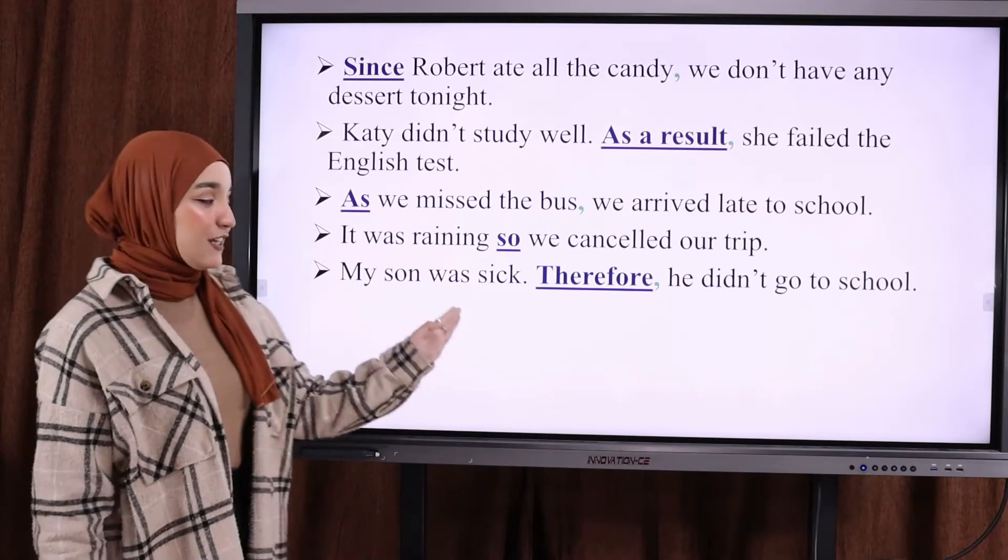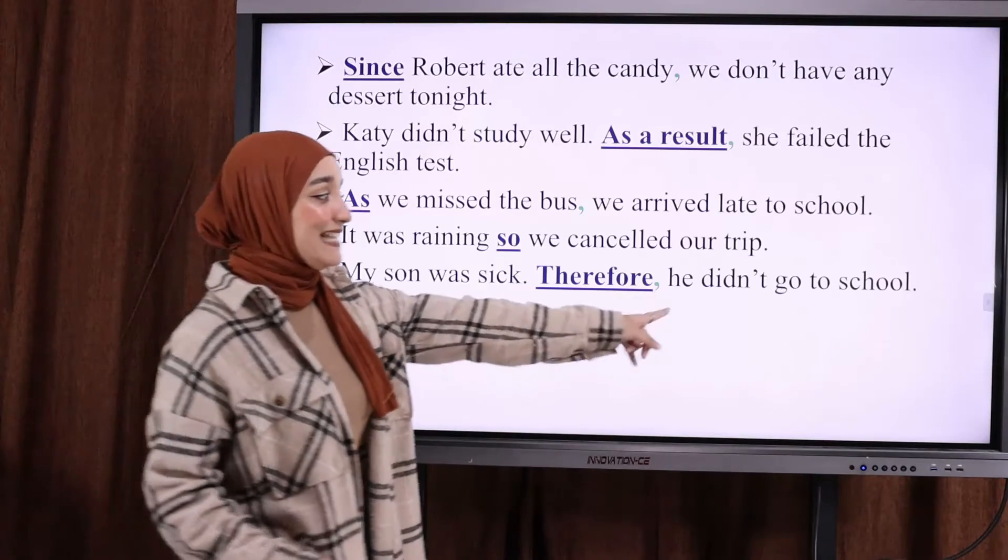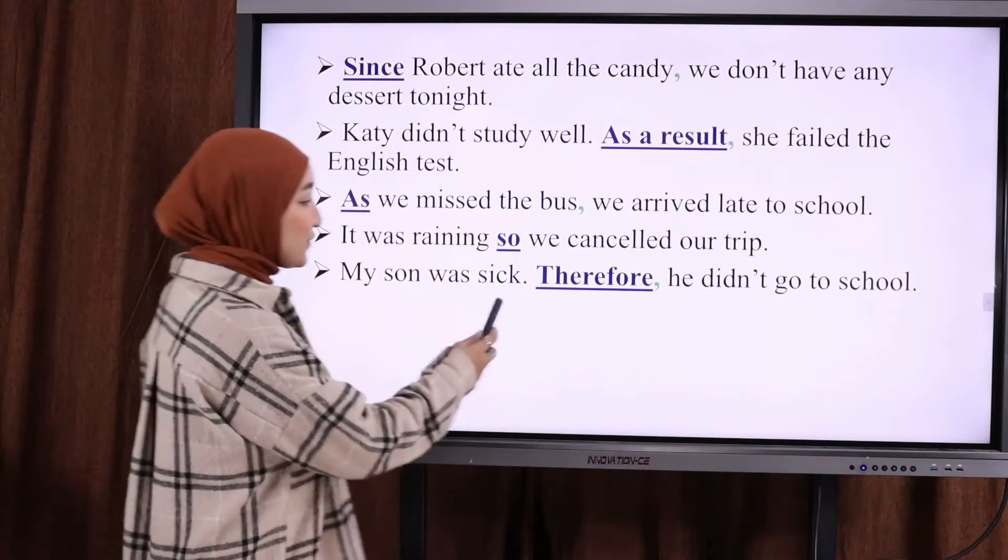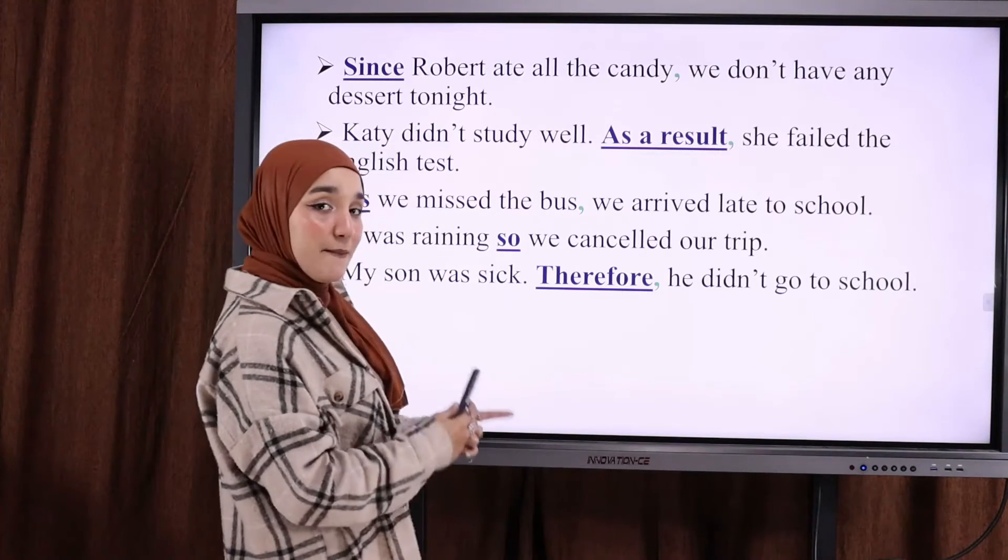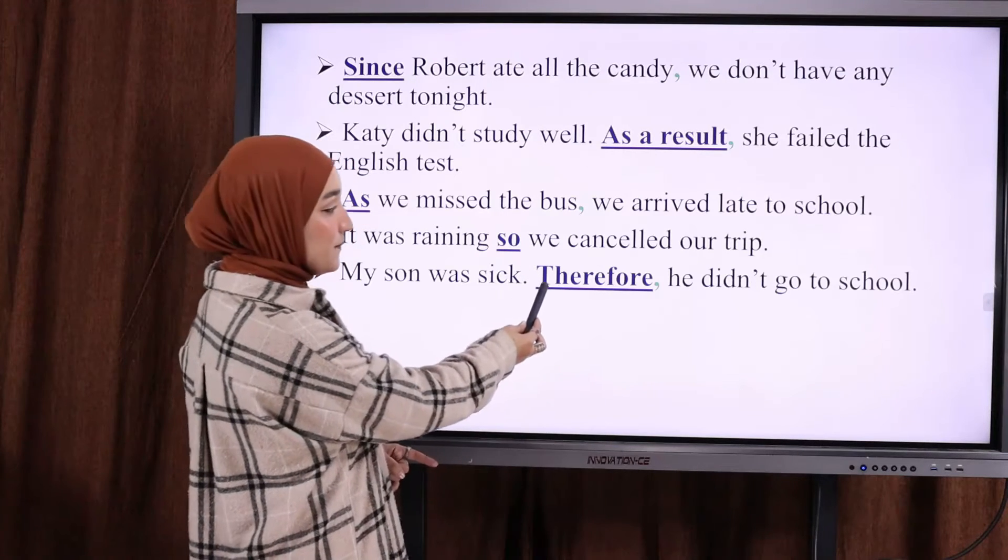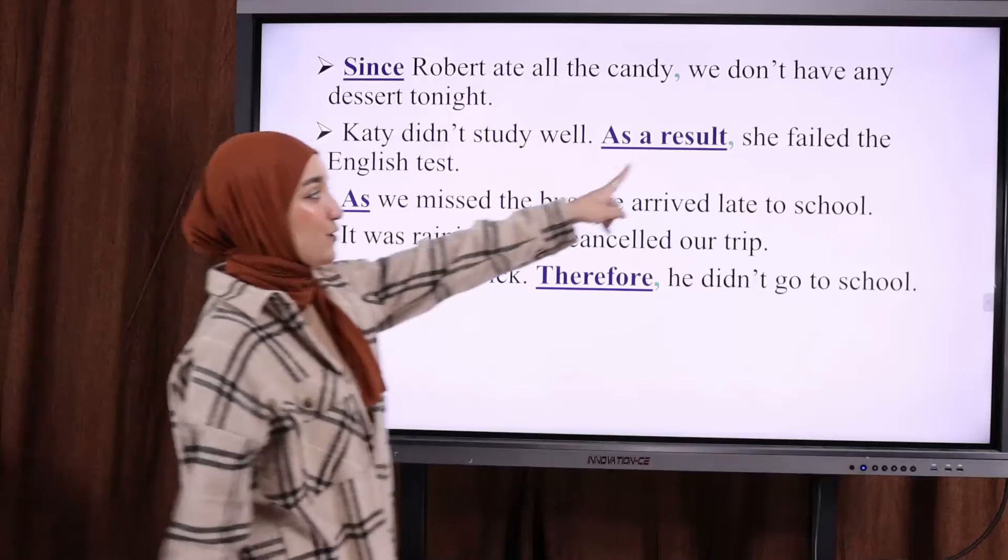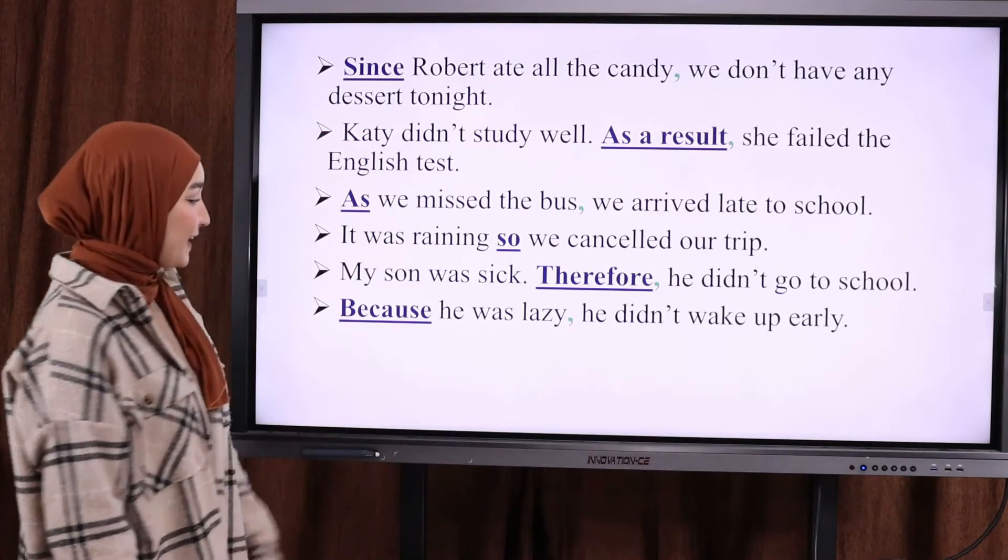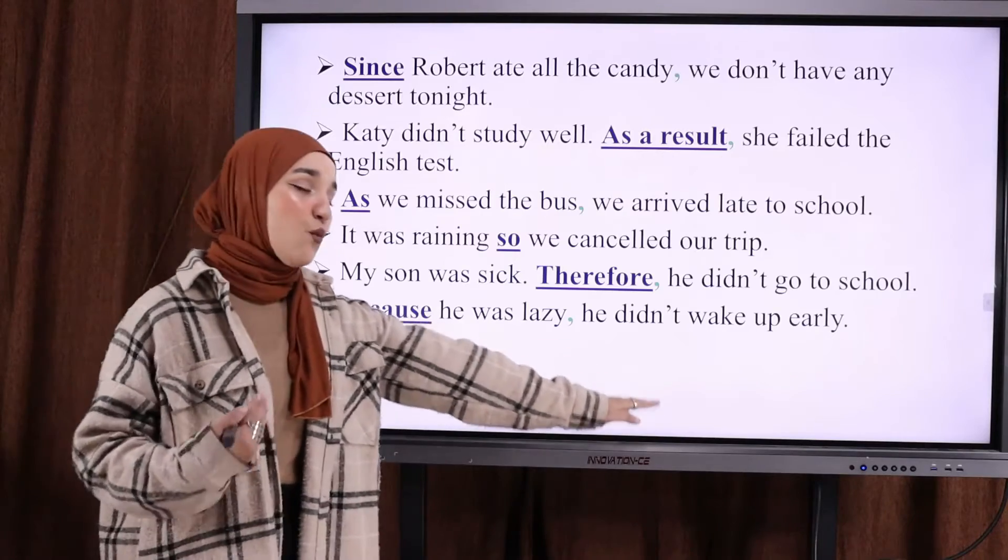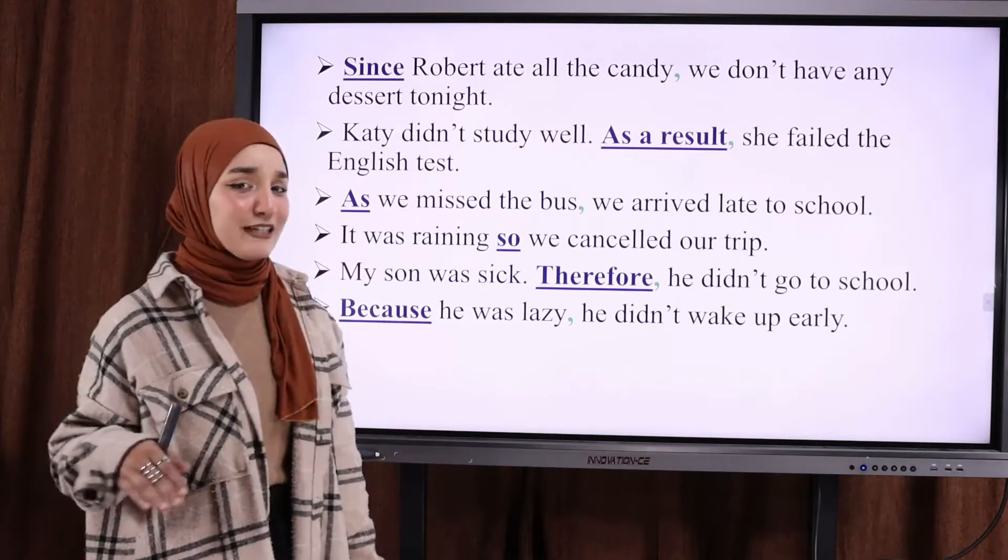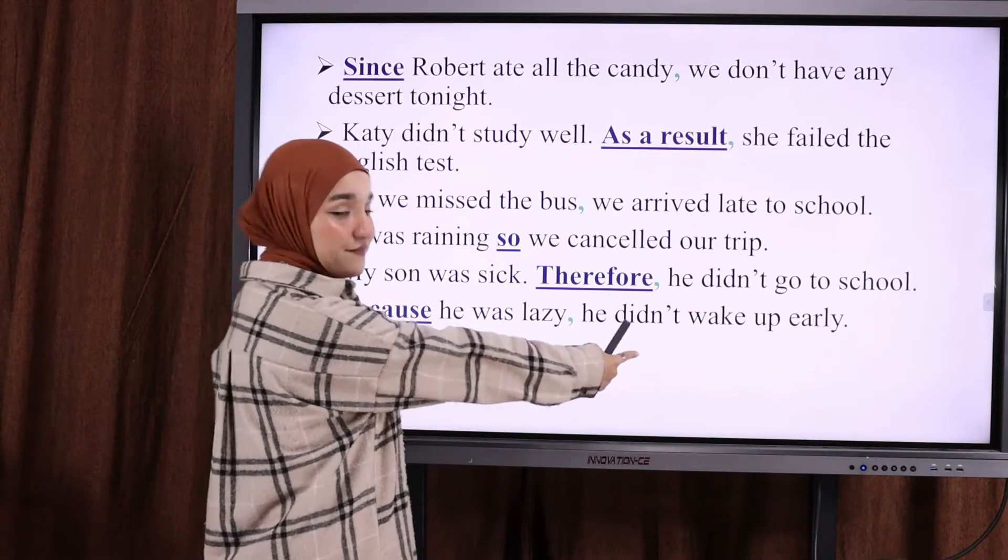Another example. My son was sick. Therefore, he didn't go to school. So, therefore and as a result are the same. When we use them in the sentence, you have to use them after a full stop. And after, you have to put the comma. Because he was lazy, he didn't wake up early. Connector, cause, comma, effect.